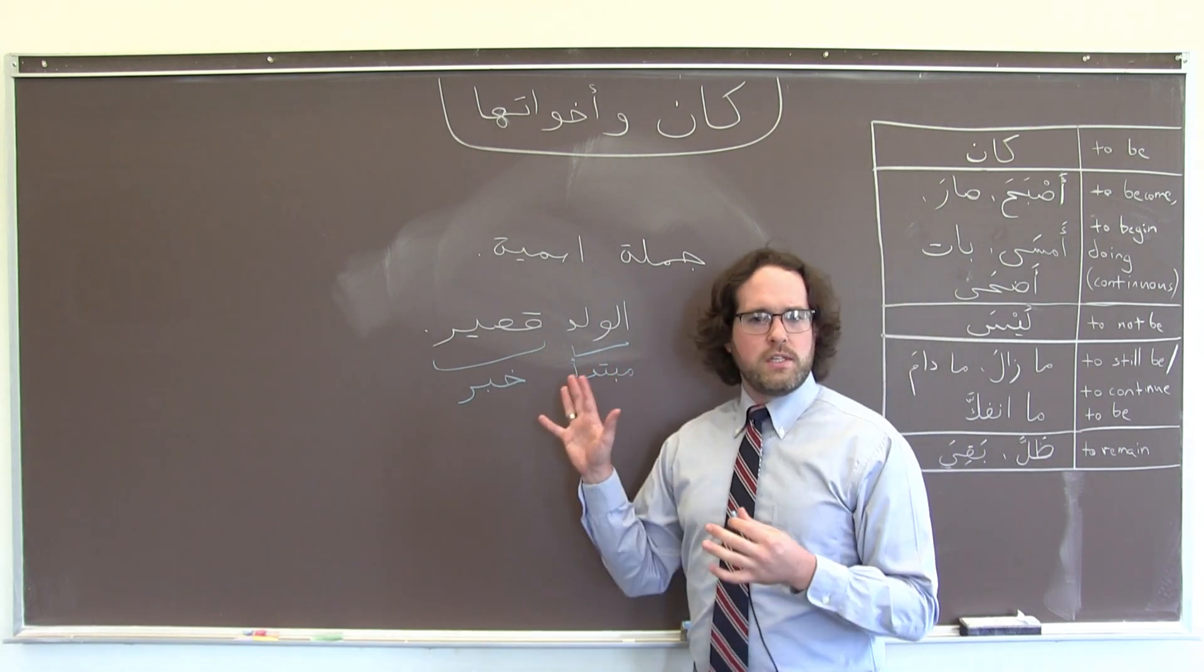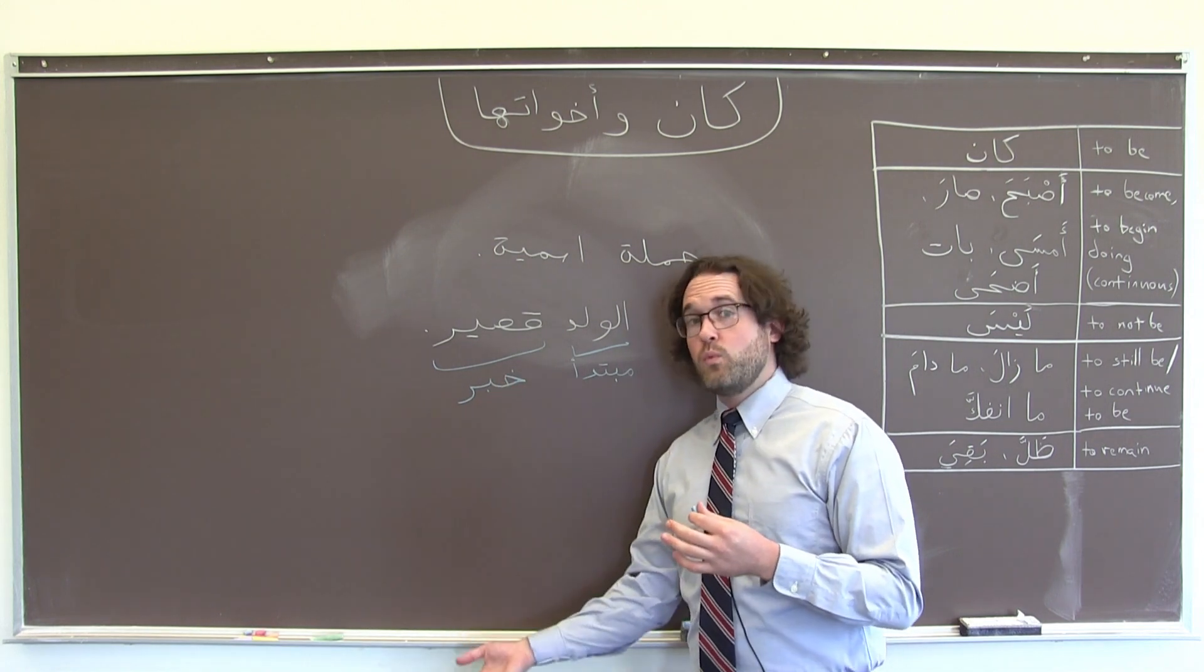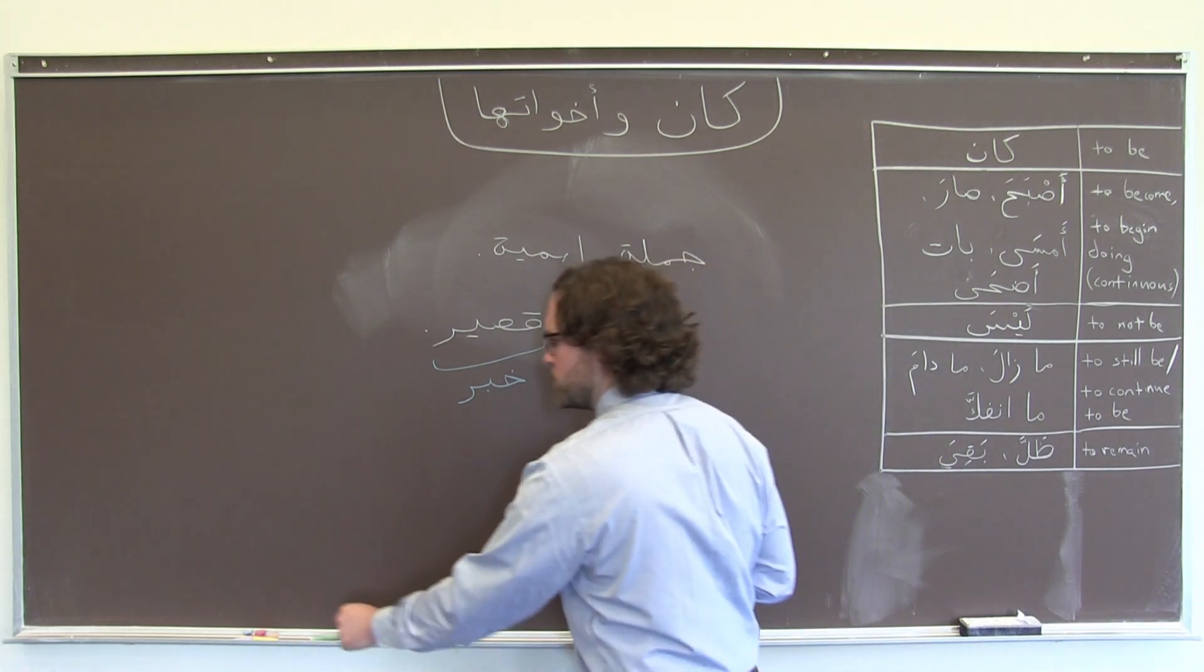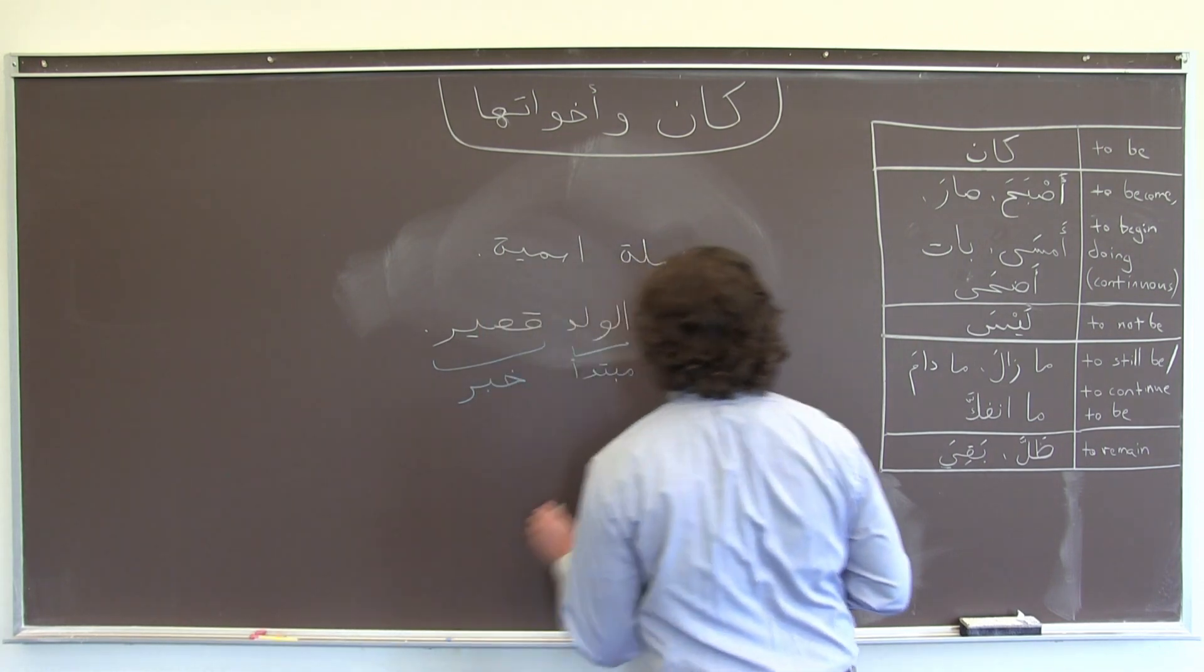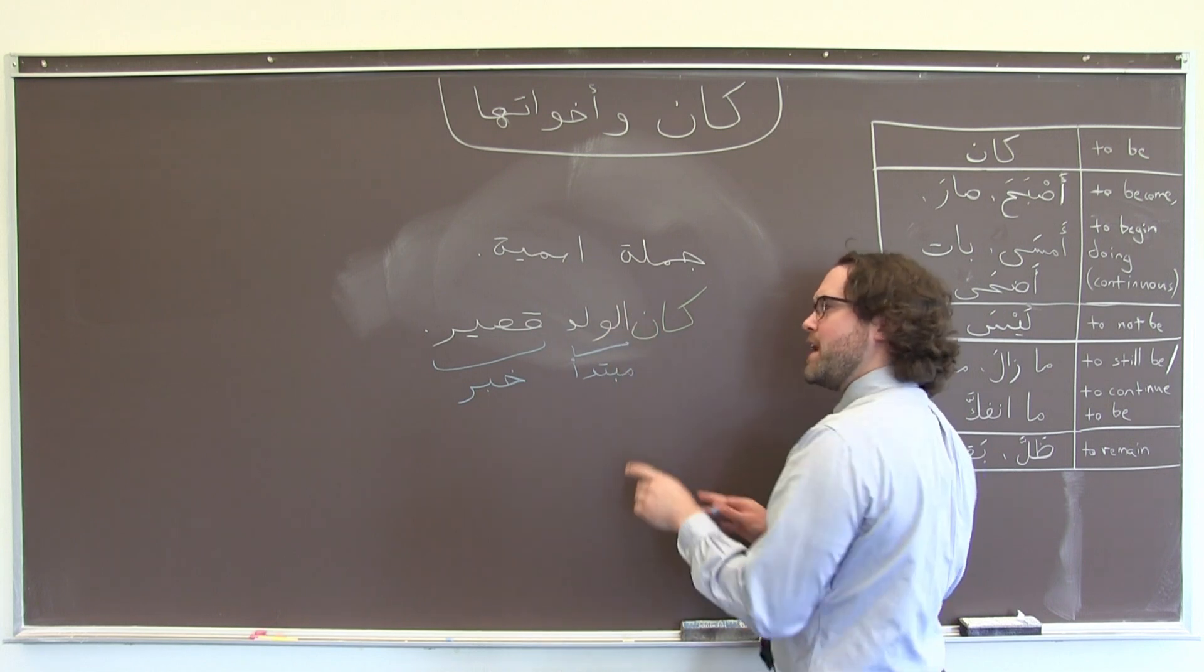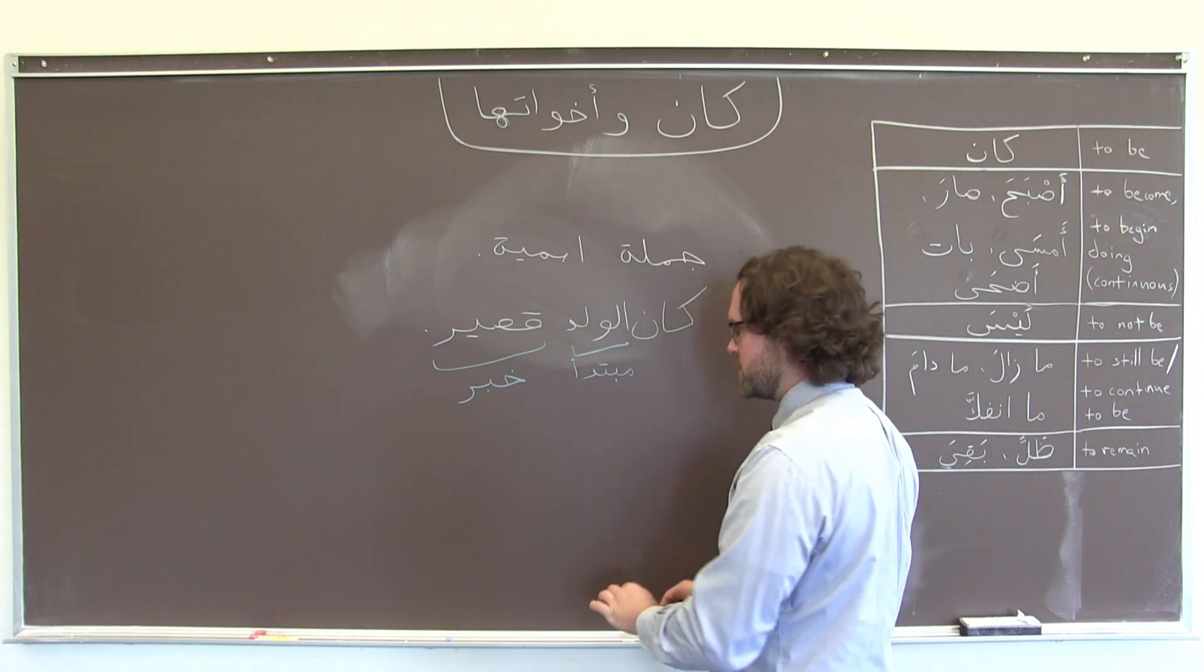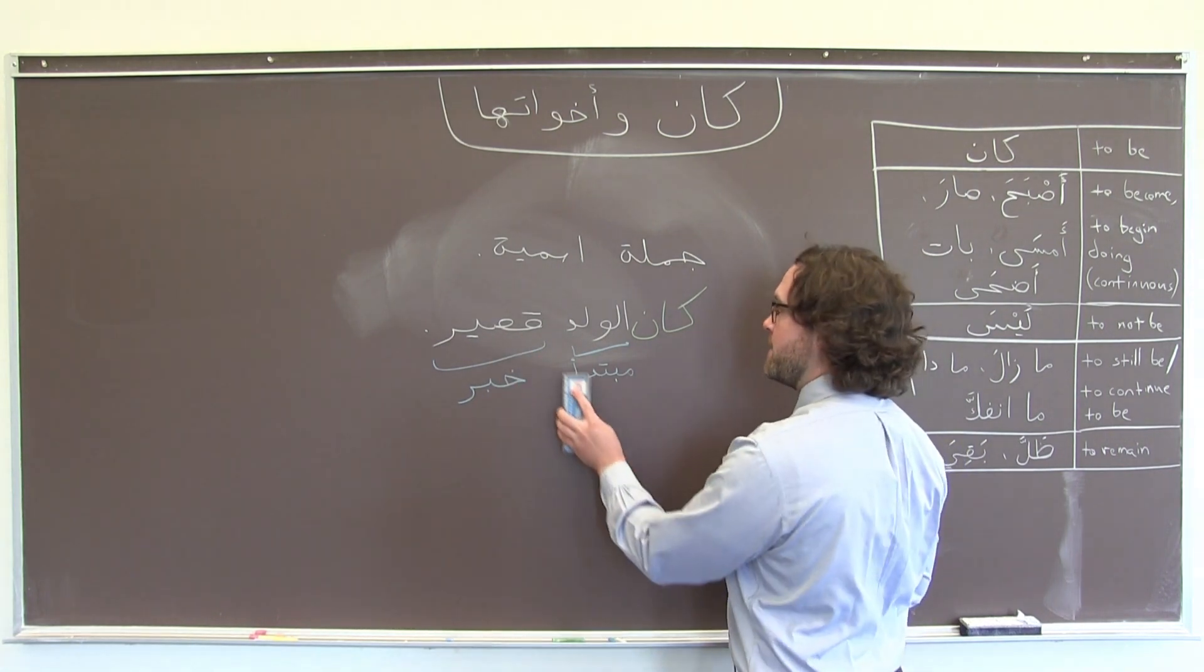Now suppose that I wanted to say the same thing only in the past. The boy was short, he grew up and got taller. But what we want to say is the boy was short. So I'm going to use the verb for being in the past. I'm going to say كان. And now instead of مبتدأ and خبر, I use a slightly different, more specific set of terminology. Since the whole sentence is now being affected by كان,